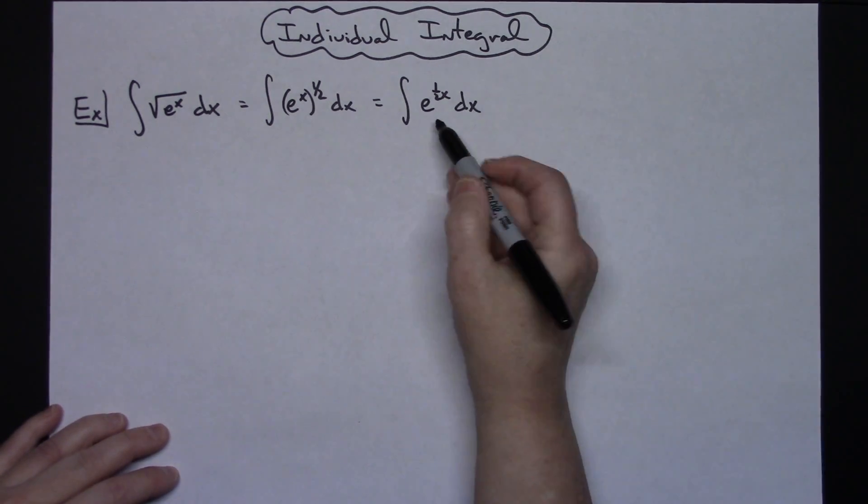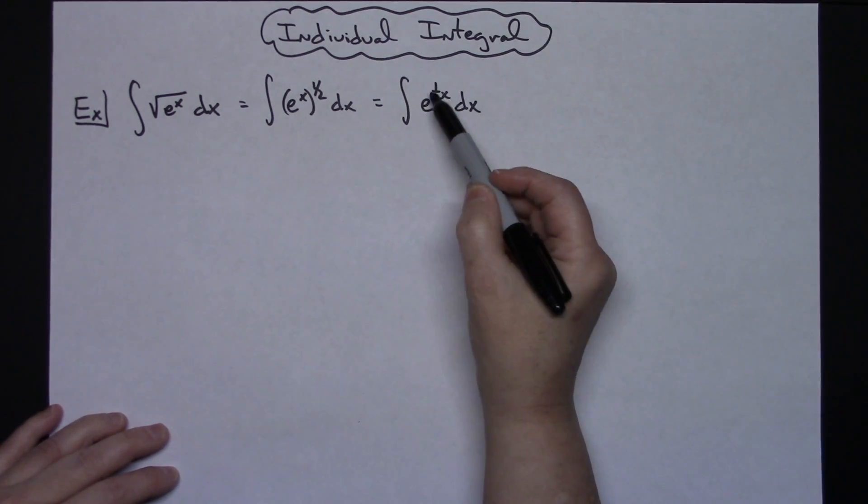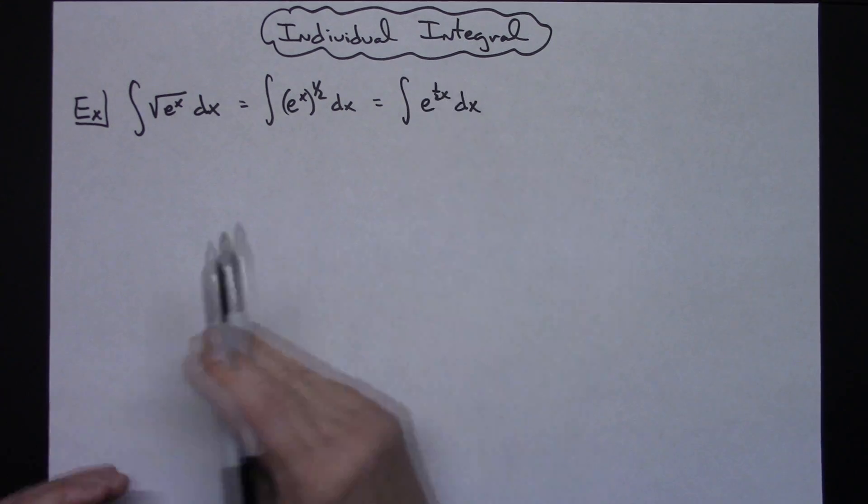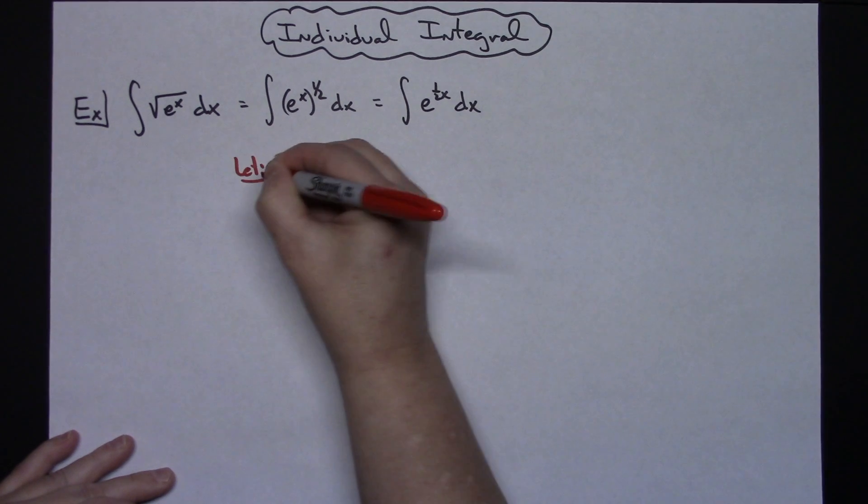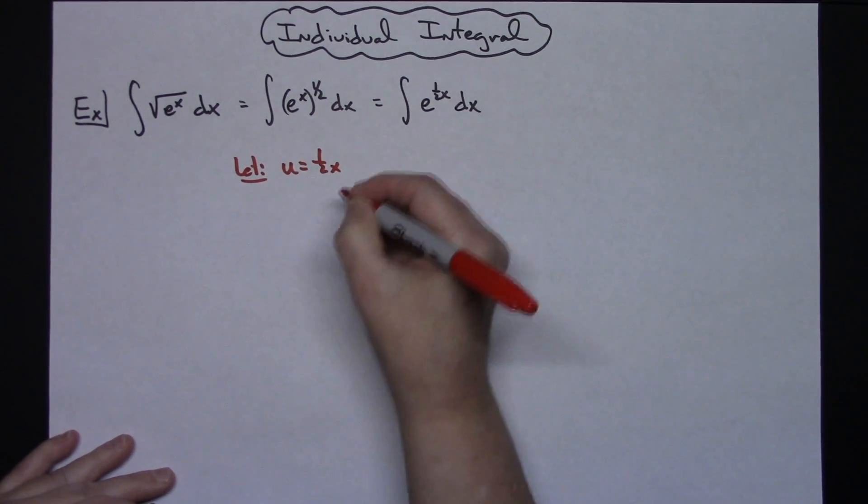Now we can see that we should let u be one-half x. So that's where we're going to start with this. We're going to let our u equal one-half x.